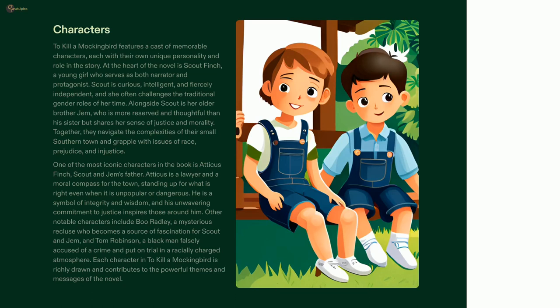Together they explore the complexities of their southern town and wade through issues of race, prejudice, and injustice. One of the most iconic characters in the novel is Atticus Finch, Scout and Jem's father. Atticus is a lawyer who stands up for what is right even when it is unpopular or dangerous. His unwavering commitment to justice makes him a symbol of integrity and wisdom throughout the story.